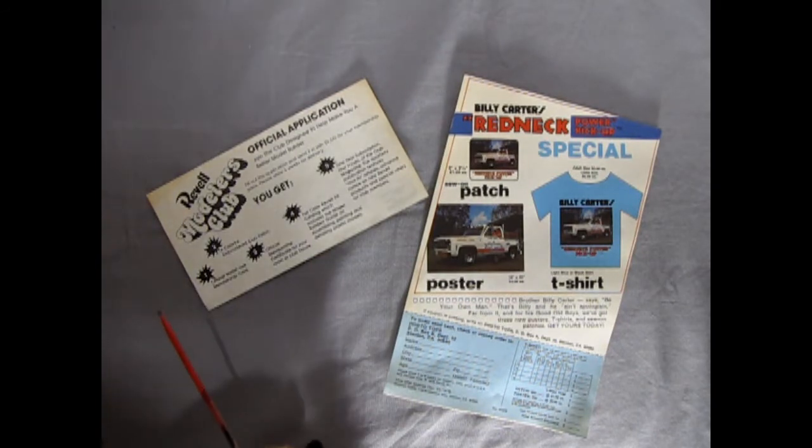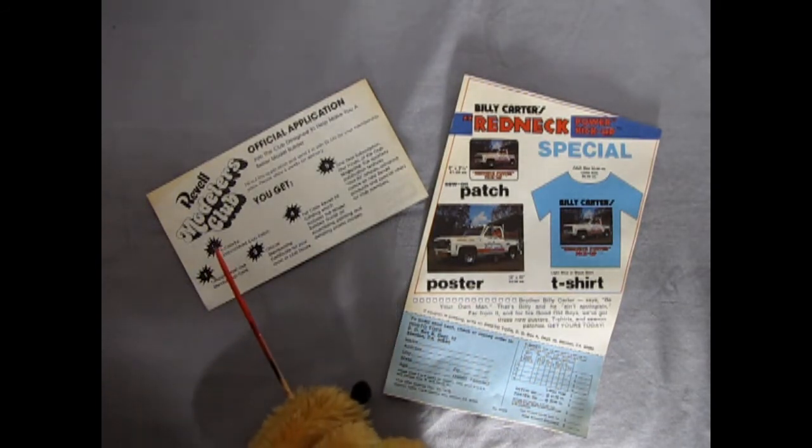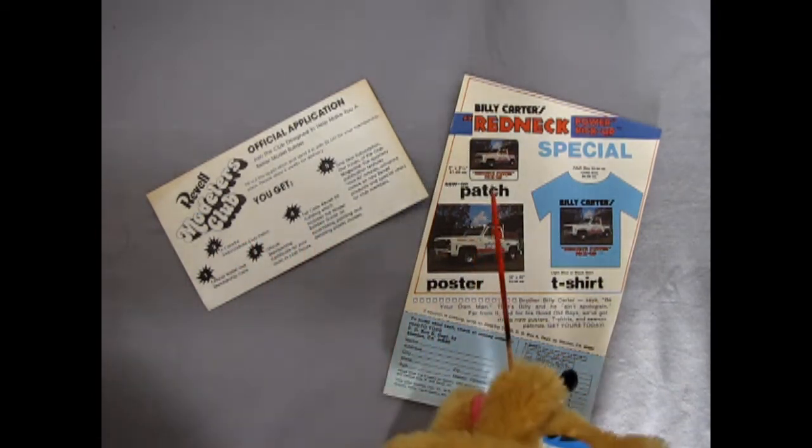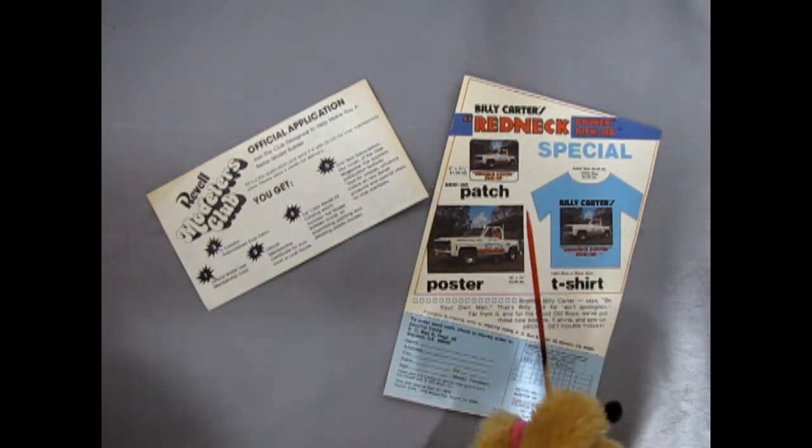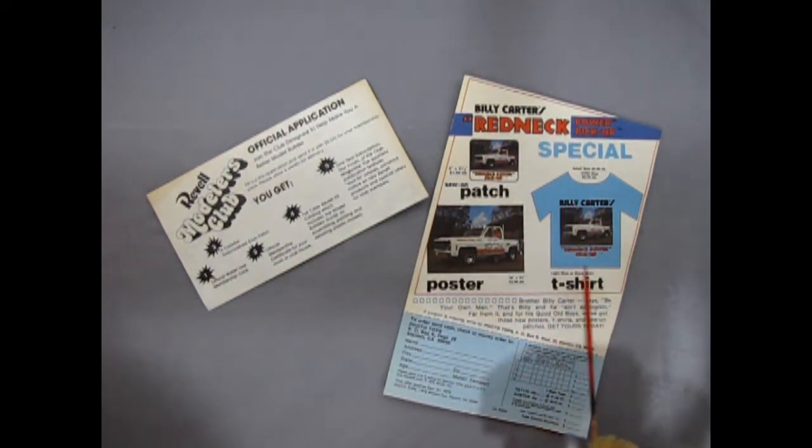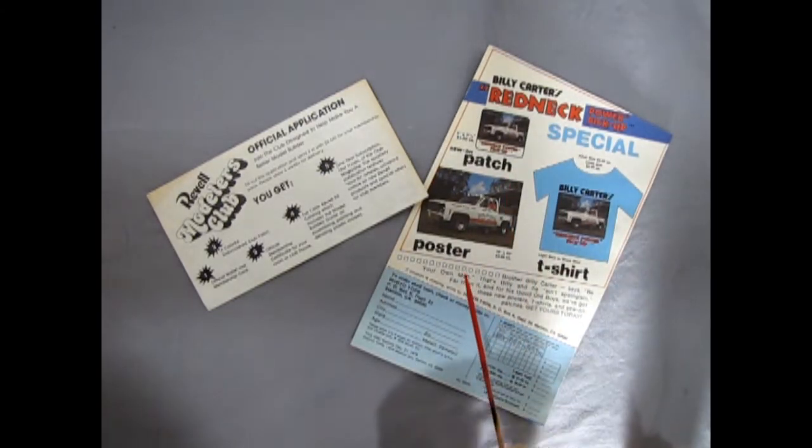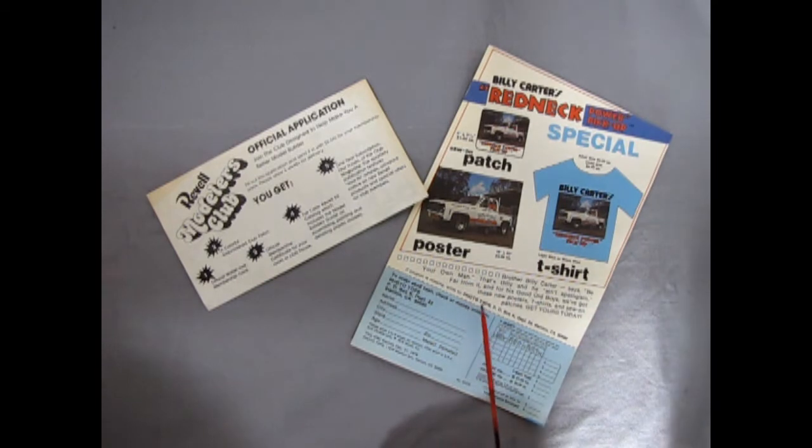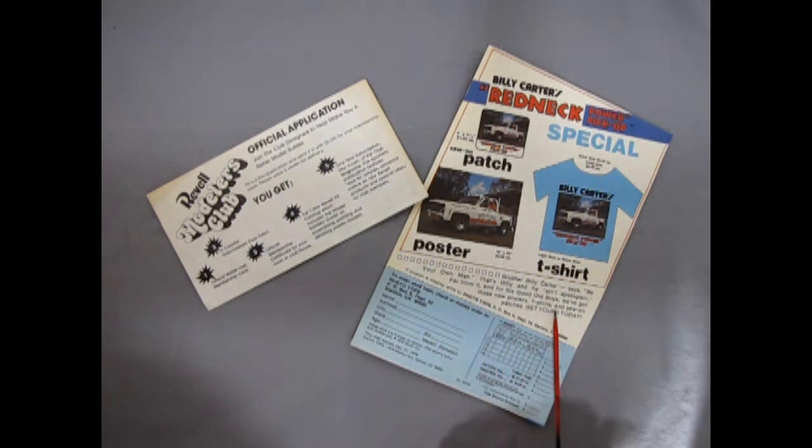So inside this model kit there's actually some really weird offers, like here you see there's one for the Revell Modelers Club, which wasn't too weird. I mean you could mail away for that. But take a look at this thing here, Billy Carter's Redneck Power pickup special. You can get a t-shirt and an iron-on patch and this poster, and what it says here is: Brother Billy Carter says be your own man, that's Billy, and he ain't apologizing. And for his good old boys we've got these new posters, t-shirts and so on, patches. Get yours today. What a strange offer.